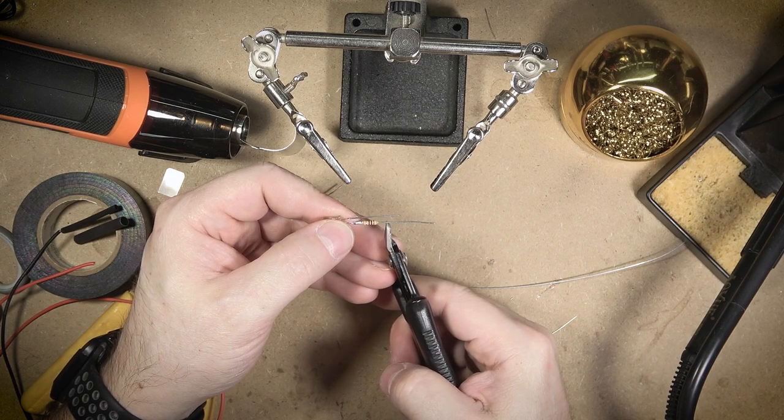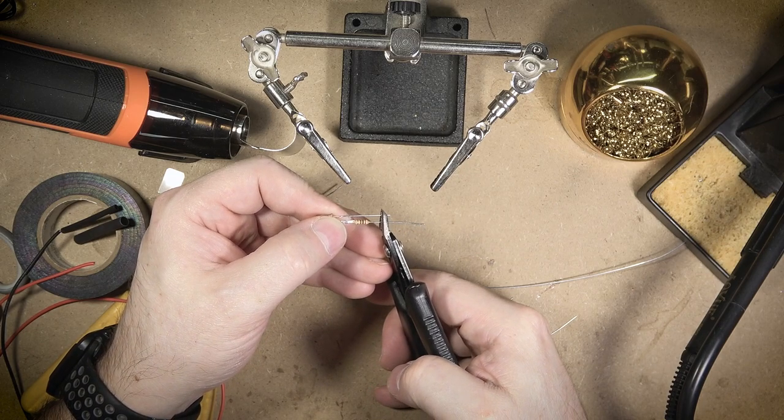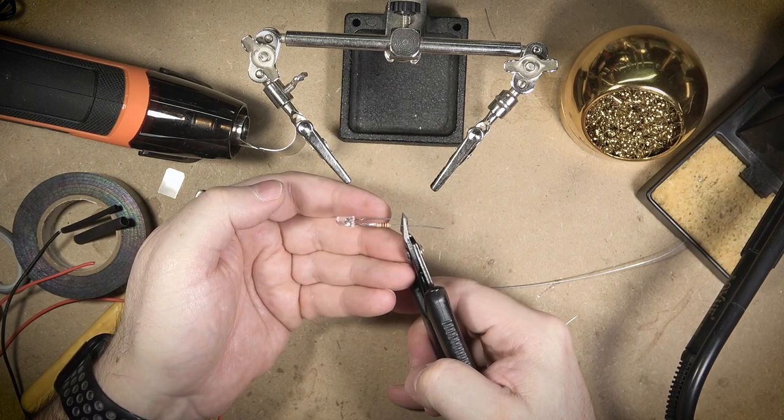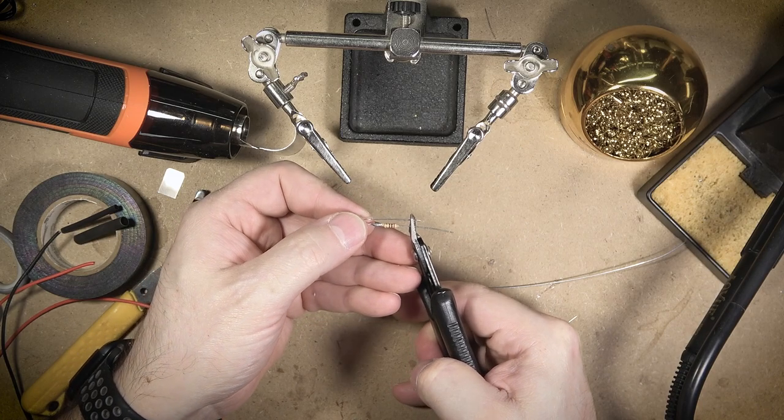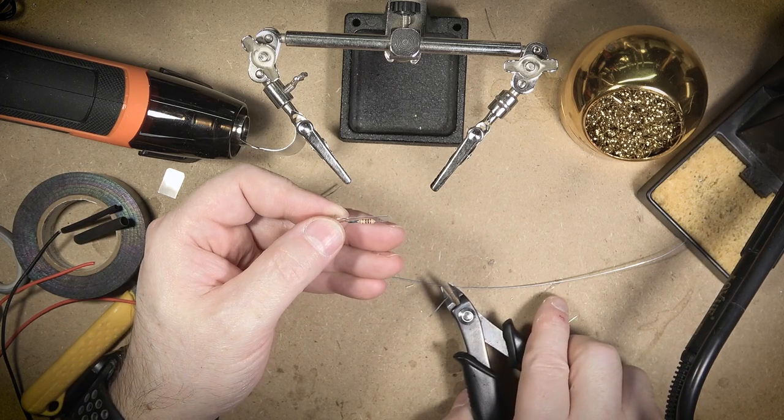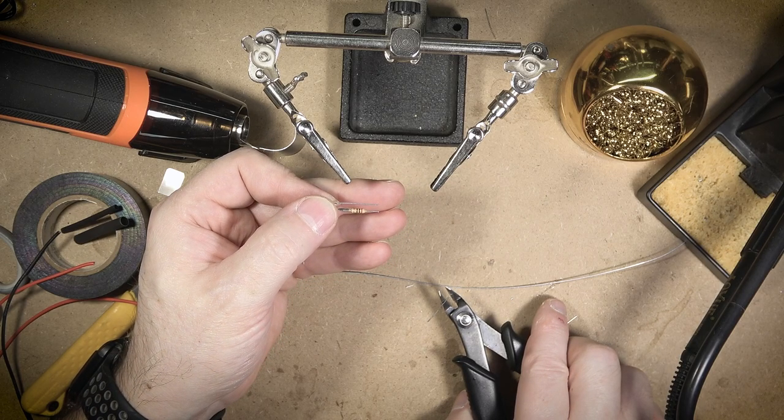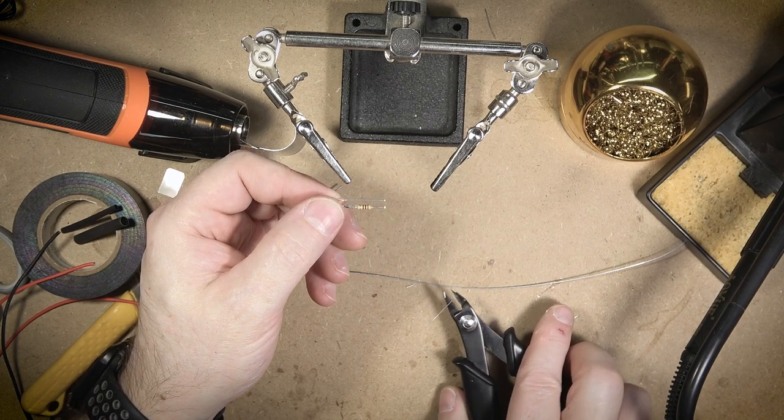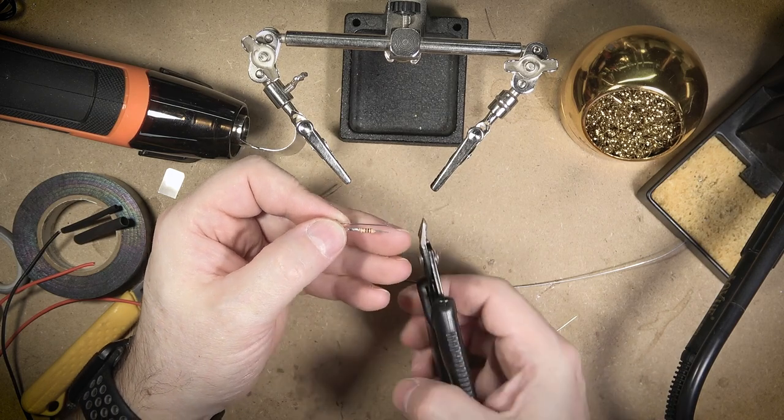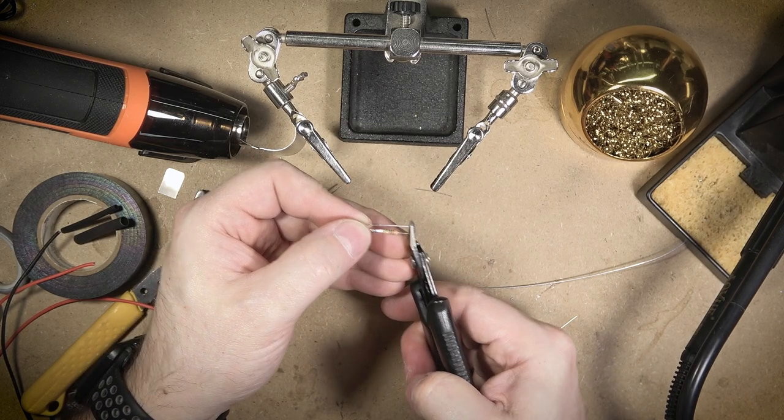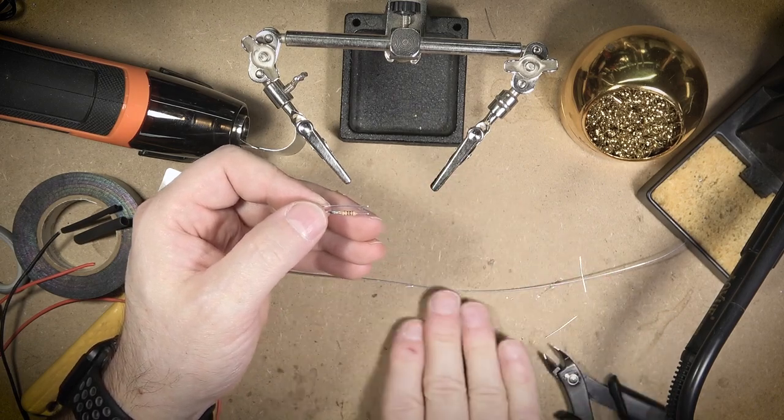Now what I'm going to do is trim on the other side both of the leads to be about the same length as we did on our first cut, something a little over a quarter of an inch. The real goal here is to keep this as compact as possible but give us enough space to actually have a good area to solder onto.